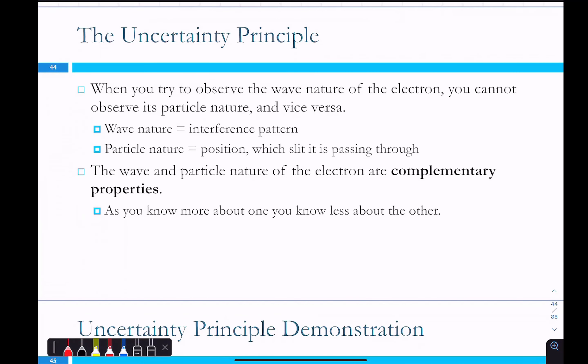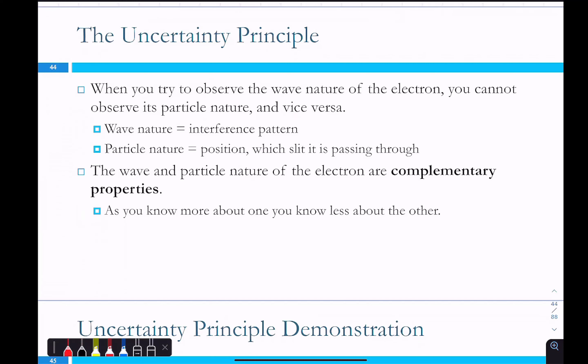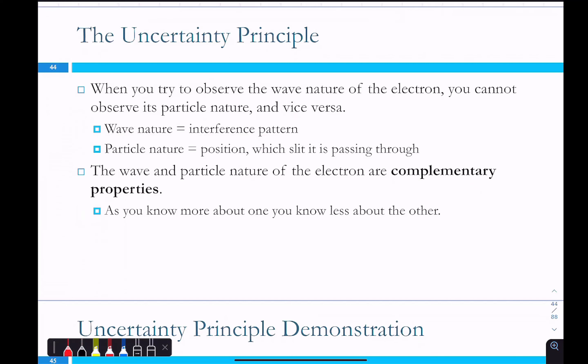Wave-like and particle-like properties also lead to some other weird things related to the uncertainty principle. If you try to observe the wave nature of the electron, you can't observe its particle nature. Depending on the experiment you set up, you observe one or the other — you can't do both. The wave nature is revealed by the interference pattern. If you set up another experiment to observe the particle nature, that's all you'll see — no interference pattern. The wave and particle nature of an electron are complementary properties: both are properties of the electron, but the more you know about one, the less you know about the other.